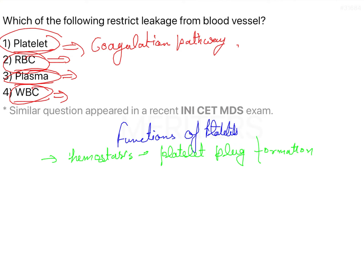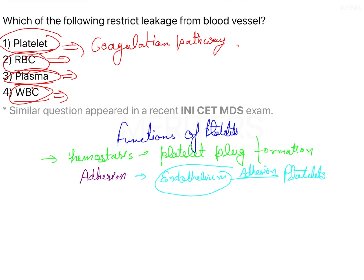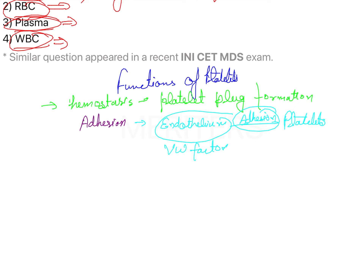There can be injuries in everyday life, so those have to be taken care of. There are three important properties of the platelet. First is adhesion — platelets adhere to exposed collagen on the injured endothelium, and they can also adhere to the von Willebrand factor.